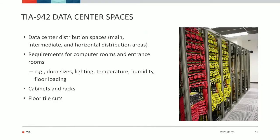We have the spaces that you put the telecom infrastructure in. We have requirements for the data center and the distribution spaces inside the data center, like the main distributor, the intermediate, and the horizontal distributor. The main distribution area would be what some people call the MDF in their data center. We also have requirements for the computer rooms, the entrance rooms, and some of the support spaces.